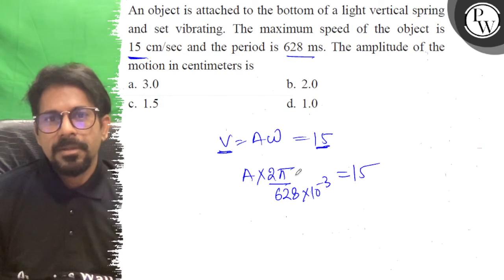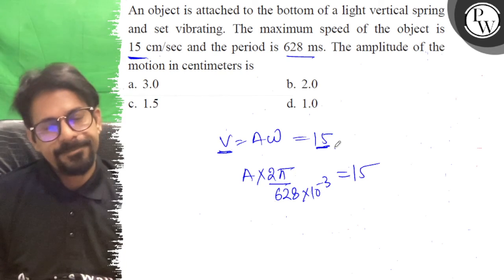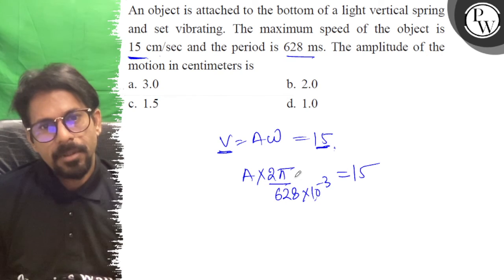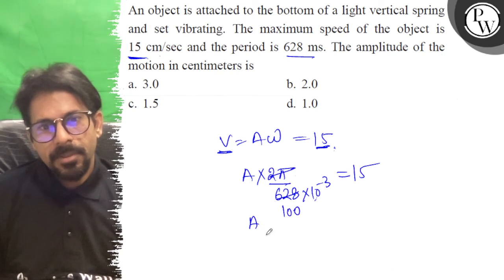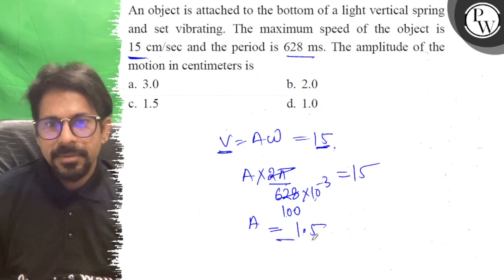Now what we are writing here, we are writing 15 cm per second and it is a millisecond. So this which we are writing 2 pi, we are writing 100 times. So this is basically 1.5 cm.